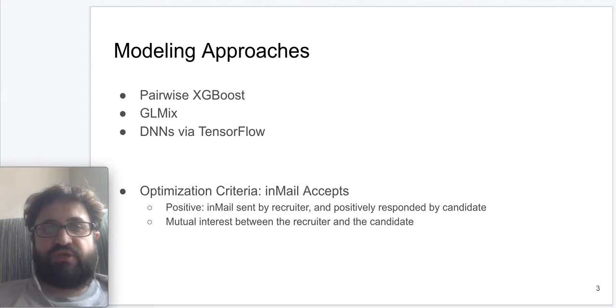The main optimization criteria for the models that are trained is to increase in-mail accepts. In-mail accepts is basically when a recruiter sends an in-mail to the candidate and the candidate responds to this in-mail in a positive manner. Such optimization criteria actually models the mutual interest between the candidate and the opportunity.